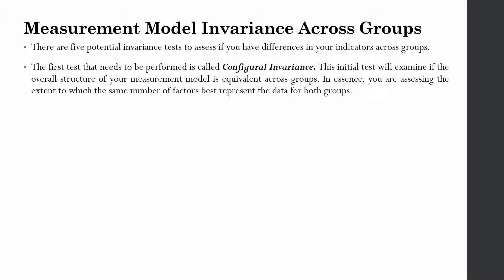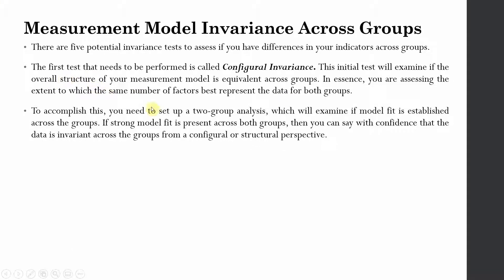If you have got two groups in your data, you will need a two-group analysis, which will examine if model fit is established across the groups. If strong model fit is present across both groups, then you can say with confidence that the data is invariant across the groups from a configural or structural perspective — that it has configural invariance.